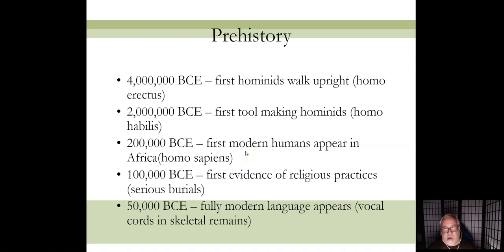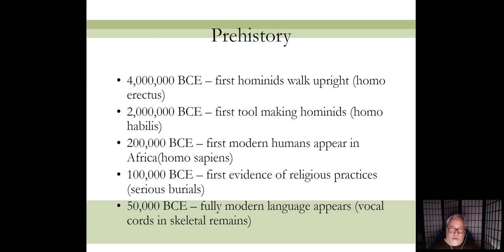The next big step in evolution takes almost two million more years: the first modern humans, Homo sapiens, who first appeared in Africa. Now you have bigger brain capacity, tool-making ability, and we assume some advanced reasoning. About 100,000 years ago they started to bury the dead — prior to that, the dead were just left out. Something changed dramatically, and the assumption is that some kind of religious practices developed around that time, evidenced by burial sites throughout the world.